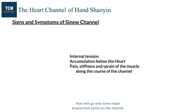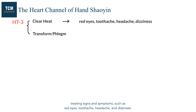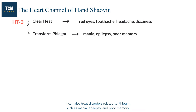Now let's go over some major acupuncture points on this channel. Heart 3 can clear heat and transform phlegm. Due to these actions, this point can drain heat from the head, treating signs and symptoms such as red eyes, toothache, headache, and dizziness. It can also treat disorders related to phlegm, such as mania, epilepsy, and poor memory.